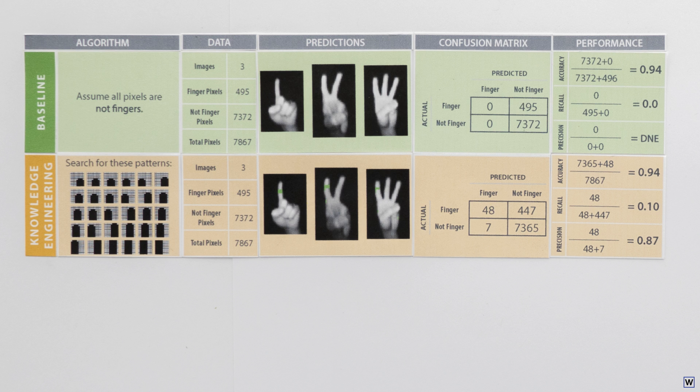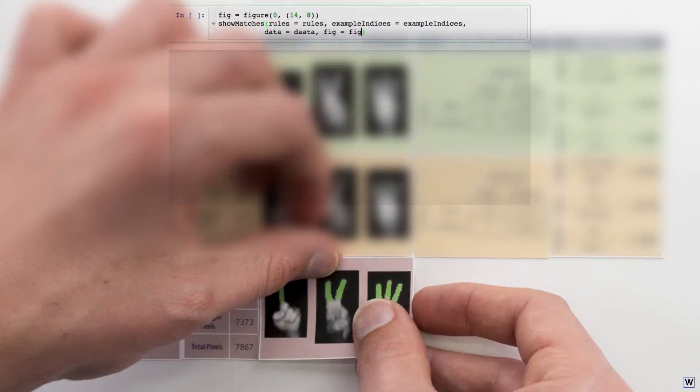After all that work on performance metrics, we're finally ready to see how our machine learning approach compares to our baseline and knowledge engineering approach. Remember that our machine learning approach consisted of matching data to our existing examples of fingers. If the data matches, it's a finger. Otherwise, it's not.